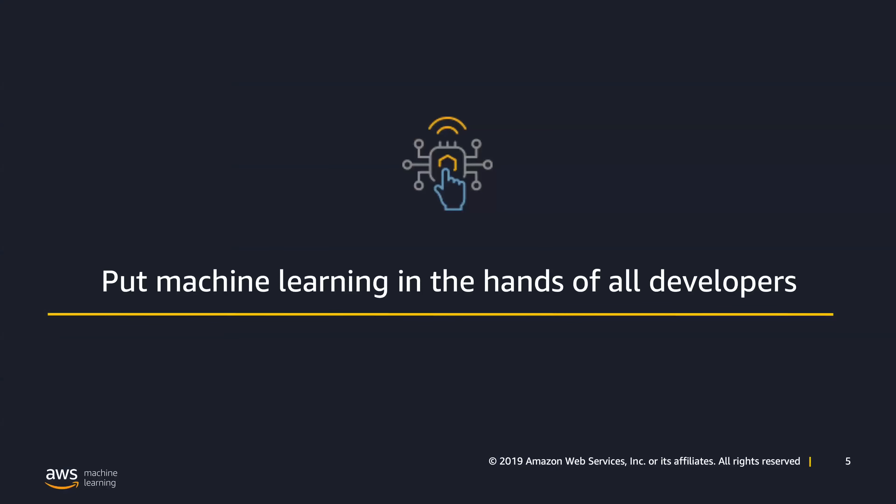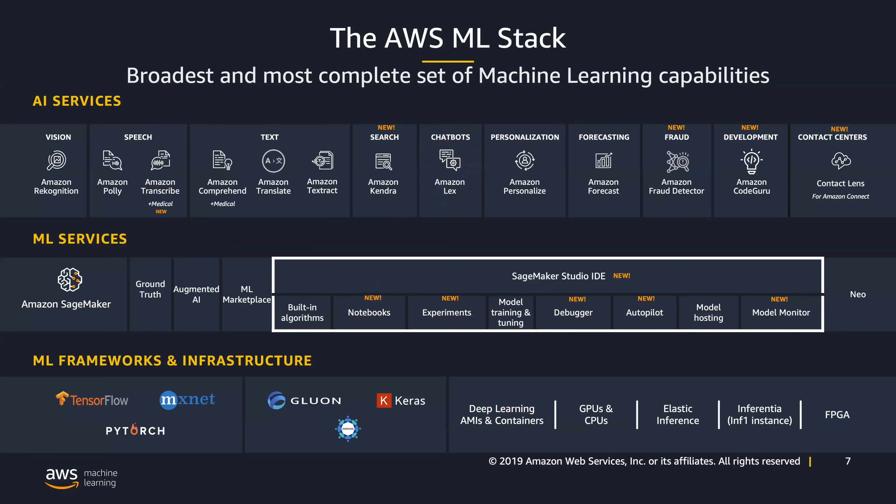So let's get started. Our mission here at AWS is to put machine learning in the hands of all developers — whether you are a data scientist or a developer that doesn't have any machine learning expertise, we want to make sure we have the services you can take advantage of. We break down machine learning here at AWS into three different layers.